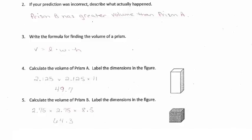All right, so let's go over the answers to these problems. If you look at number four, calculate the volume of prism A. The volume of prism A is 49.7 cubic inches. You can see that the length and the width is 2.125, and then the height is 11. And the volume for prism B is 64.3 cubic inches. And the length and width is 2.75, and the height is 8.5.